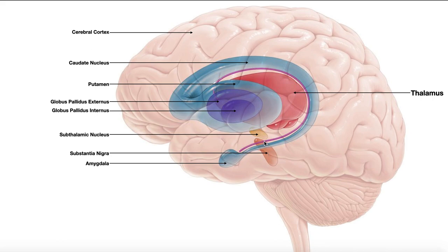The substantia nigra is actually the structure that is impaired in Parkinson's disease. If we loop around the tail of the caudate all the way down, this would be the amygdaloid body or the amygdala, which is part of the limbic system.